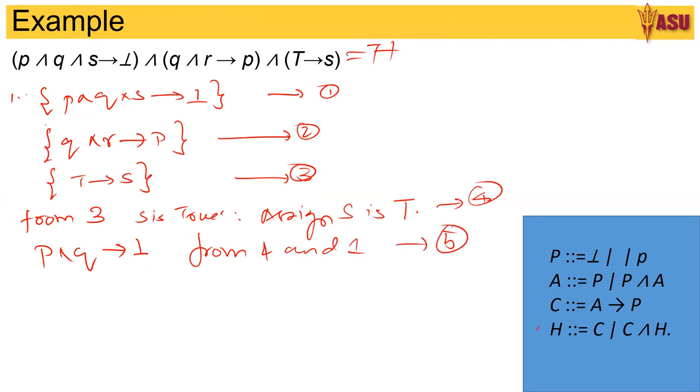Now for P and Q to be false, there are multiple options. 1. P is bottom, Q is true. In this case, what happens to formula 2. So this implies, bottom and R goes to true. This is from 2. So this implies, R is true or R is false satisfies 2.